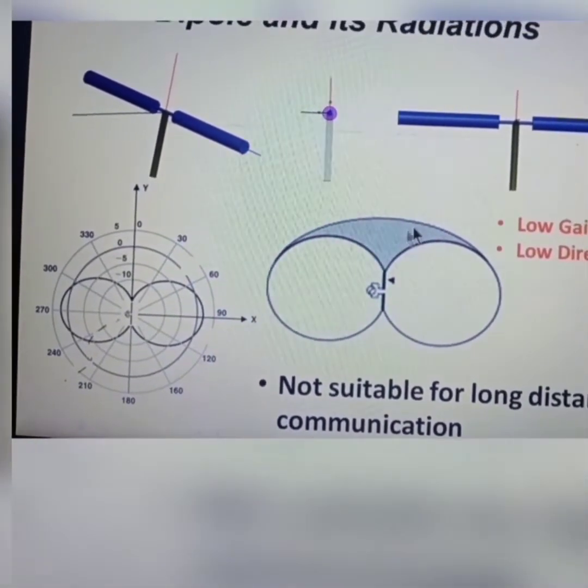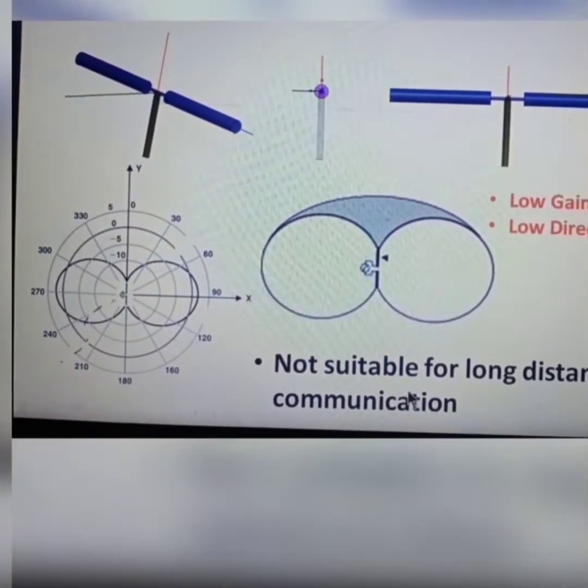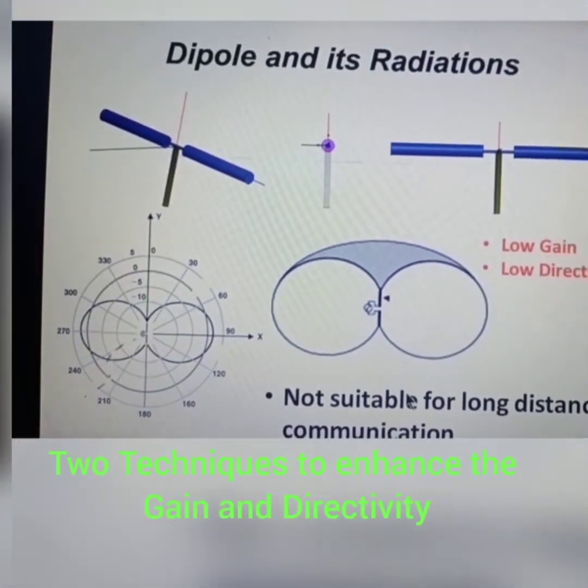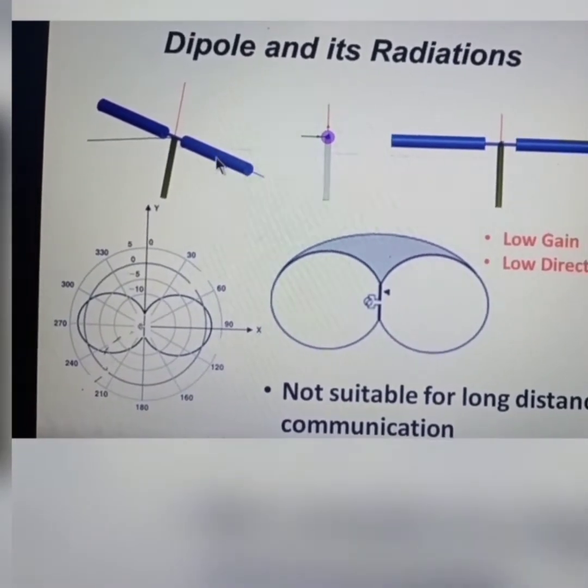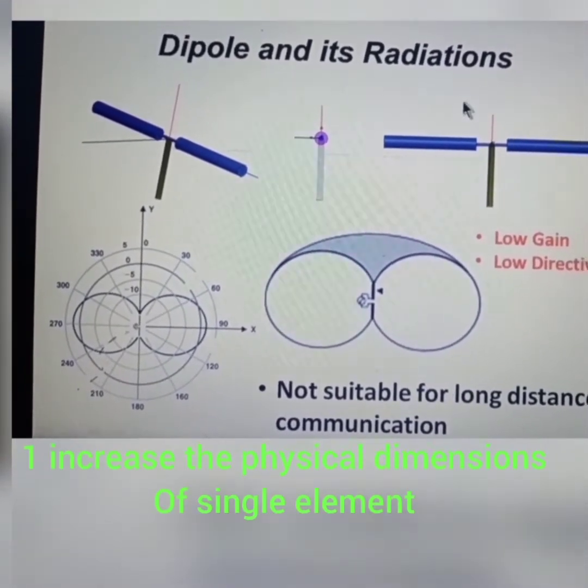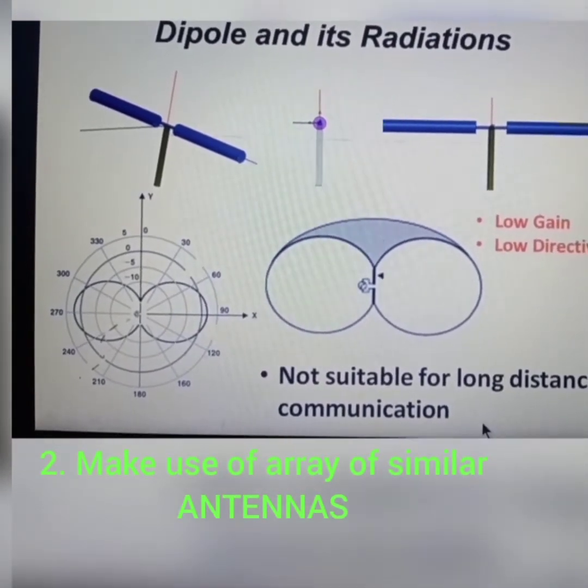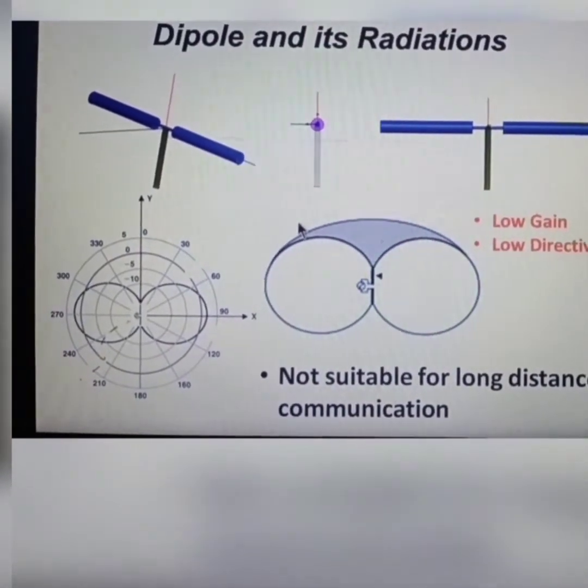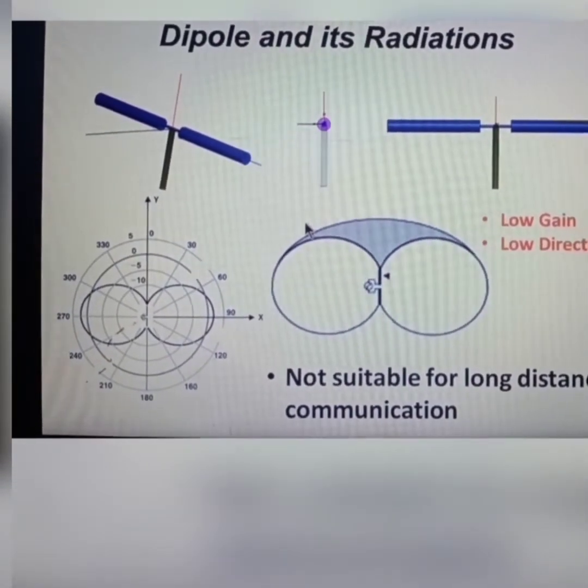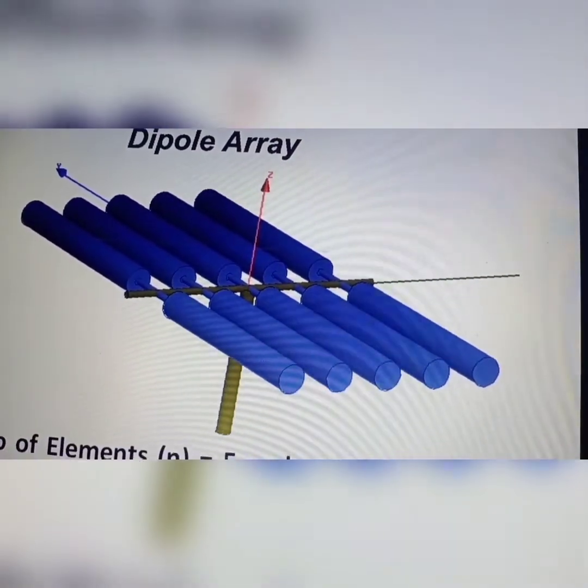Here there are two techniques to enhance the gain and directivity. The first one is to enhance the dimensions of a single element, so that you can increase the electrical length, and automatically gain will enhance or directivity also enhances. Otherwise, you have to connect n number of same dipole elements or same antennas to enhance the gain and directivity. In the first technique, if you enhance the dimensions of a single element, it is very difficult to handle in practical application.